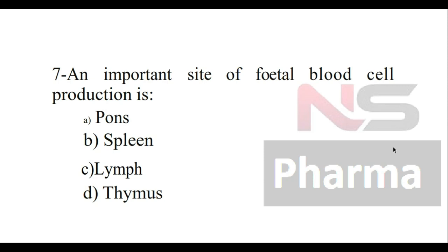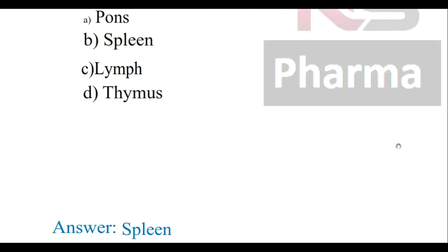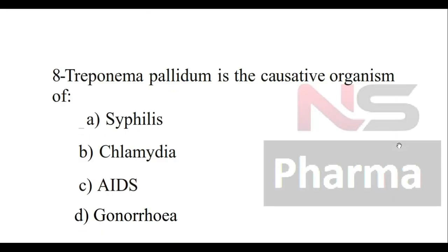Question number seven: An important site of fetal blood cell production is — Option A: Pons, Option B: Spleen, Option C: Lymph, Option D: Thymus. The answer is spleen.